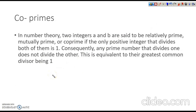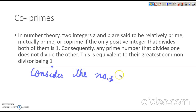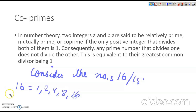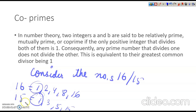Co-primes: every pair of two natural numbers having no common factor other than 1 is co-prime. For example, consider the numbers 16 and 15. Factors of 16 are 1, 2, 4, 8, and 16. And the factors of 15 are 1, 3, 5, and 15. The only common factor in 16 and 15 is 1. So we can say that they are relative primes, or co-primes.